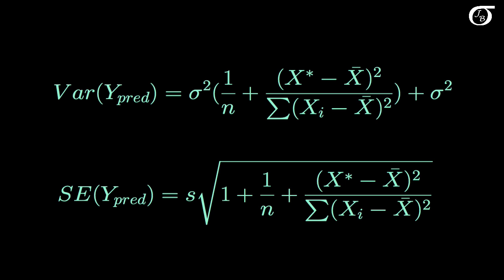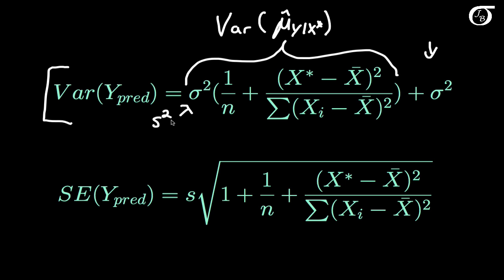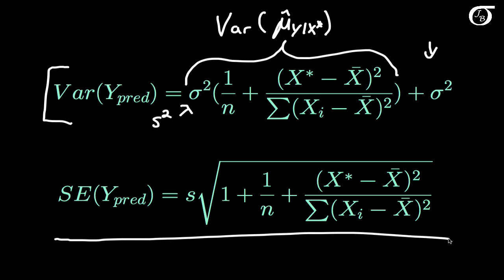The standard error for the predicted value is a little different. It can be shown that the variance of our predicted value, if we break it down, equals the variance of the estimator of the mean of y at that given value of x, plus sigma squared. Remember that in regression analysis, sigma squared represents the variance of y at a given value of x. To find the standard error, we substitute s squared in place of sigma squared and take the square root — that gives us the standard error of our predicted value.